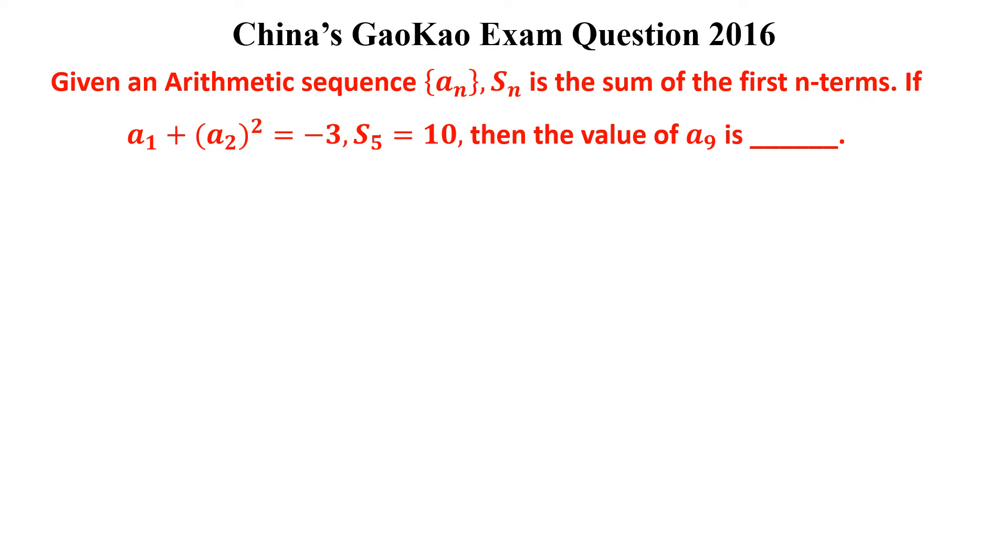Let's begin to solve the question. From here we can write S_5 = 5/2 × (a_1 + a_5). 10 = 5/2 × (a_1 + a_5). This can be written as a_1 + 4d where d is the common difference. Simplifying this we will get 2a_1 + 4d = 4. Simplify more, we will get a_1 = 2 - 2d. Let this be equation 1.